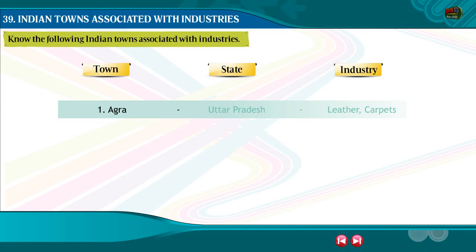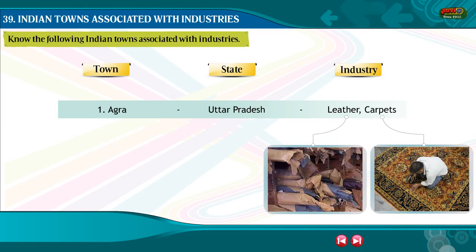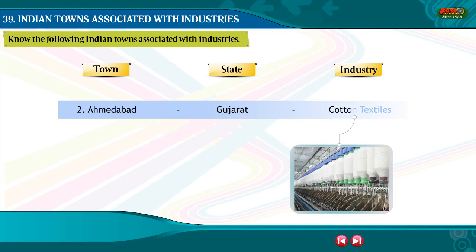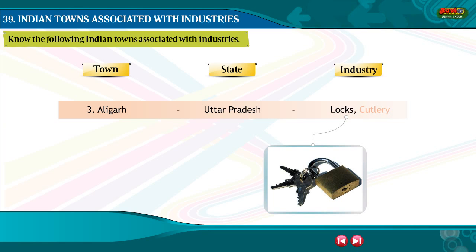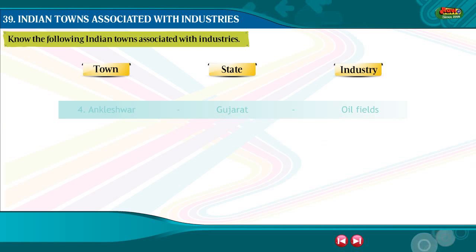1. Agra, Uttar Pradesh — Leather, Carpets. 2. Ahmedabad, Gujarat — Cotton Textiles. 3. Aligarh, Uttar Pradesh — Locks, Cutlery.